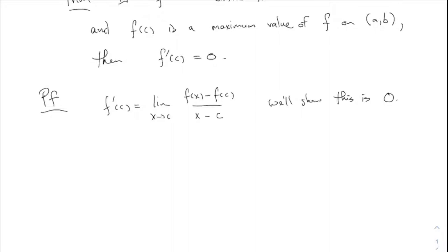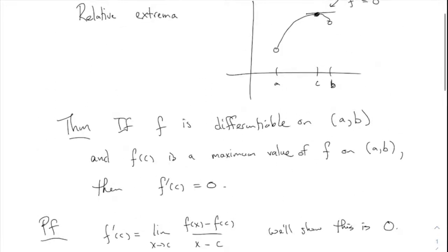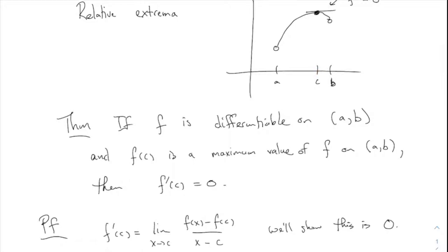We're going to use sequences here — this is unusual, since usually you use sequences to show a limit does not exist, but it will work out. What we're going to do is choose one sequence XN approaching C from below, and another sequence YN approaching C from above. Since C is in the open interval, C is not an endpoint, so we can find points approaching C from both sides.